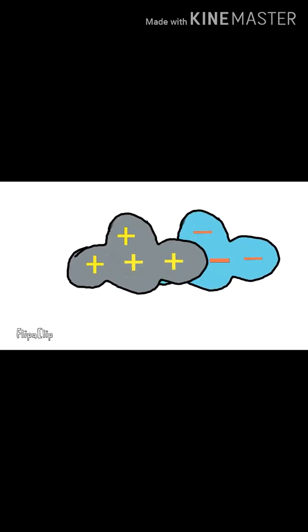Now these charged clouds discharge into the ground and this causes the lightning. Now we want to resist the lightning to occur and for that we need a lightning conductor.